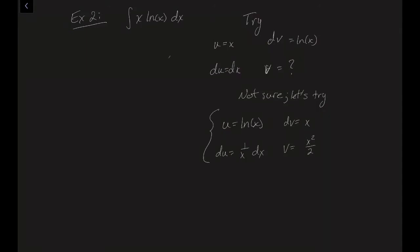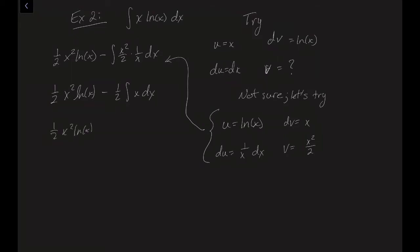We can work with this now. Plugging into the formula, UV minus the integral of V dU gives us one-half x squared ln(x) minus the integral of x squared over 2 times 1 over x dx. Cleaning up inside the integral we get x dx, and pulling out the one-half, integrating x gives x squared over 2, times that one-half gives one-fourth x squared, plus C.